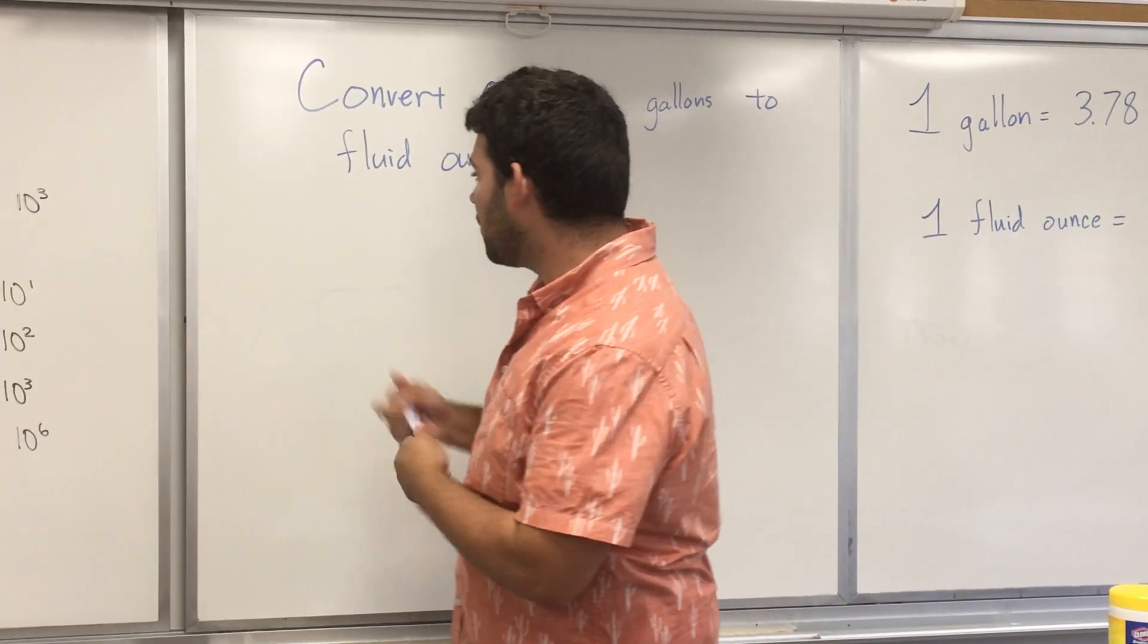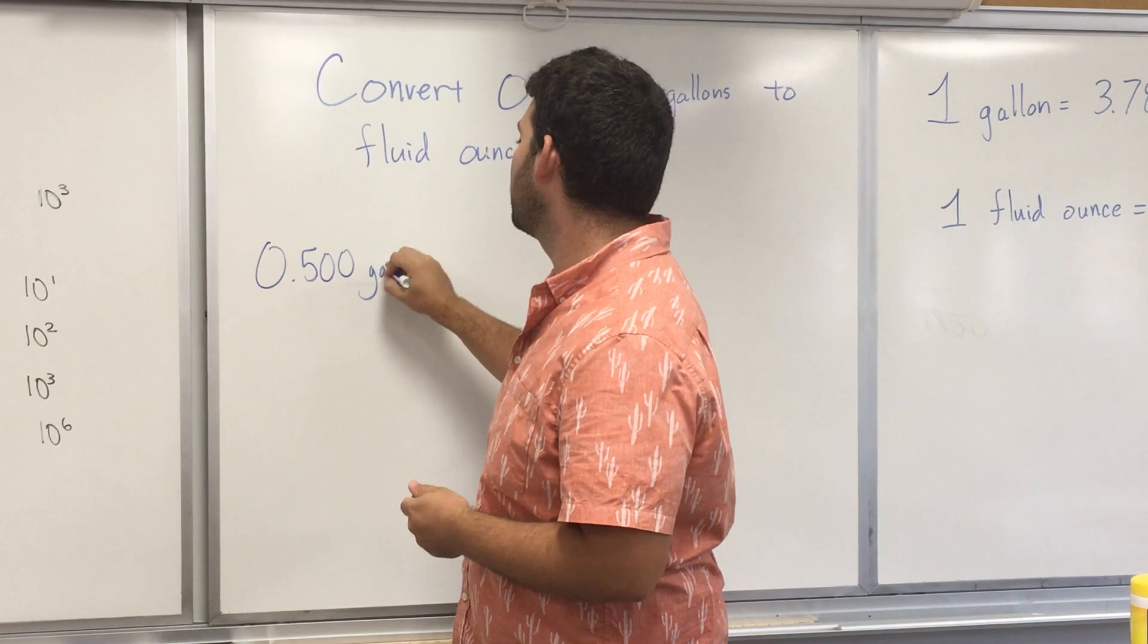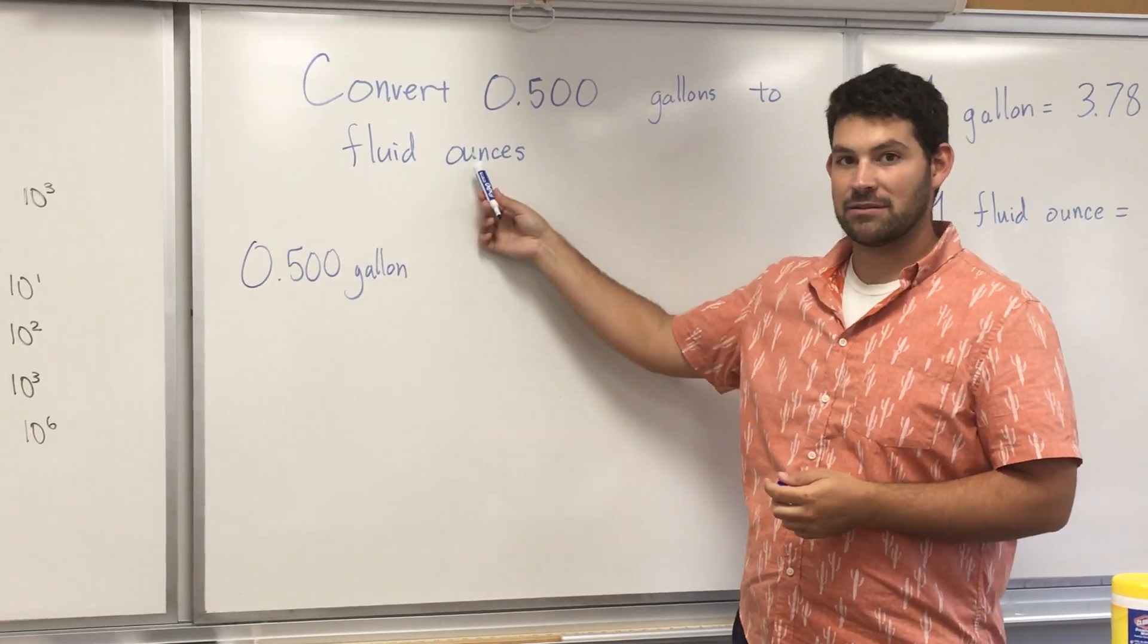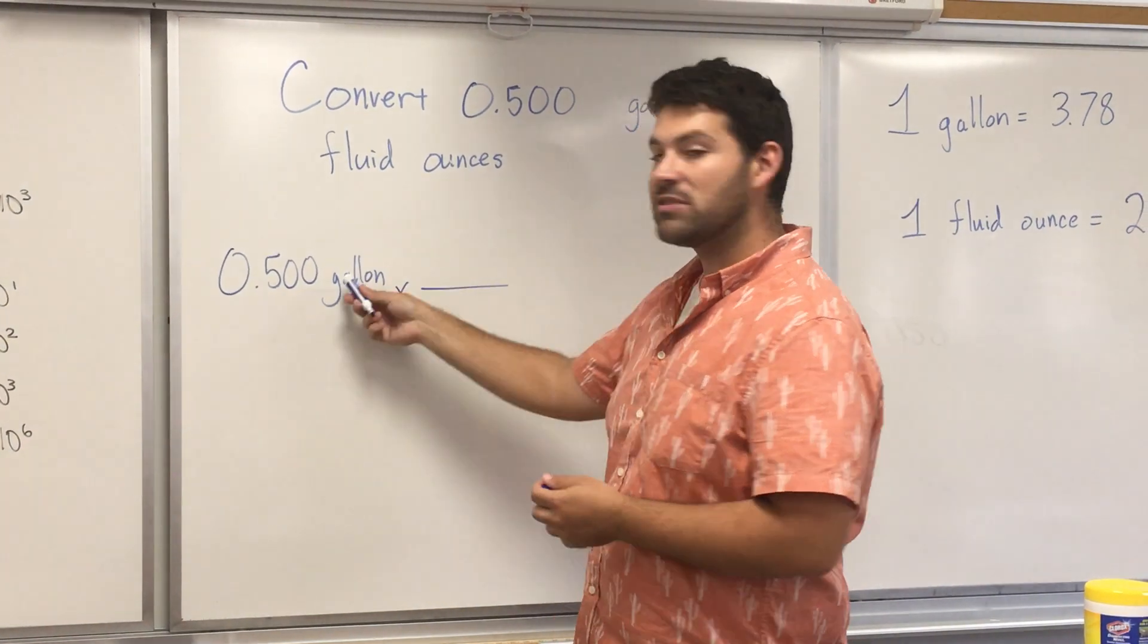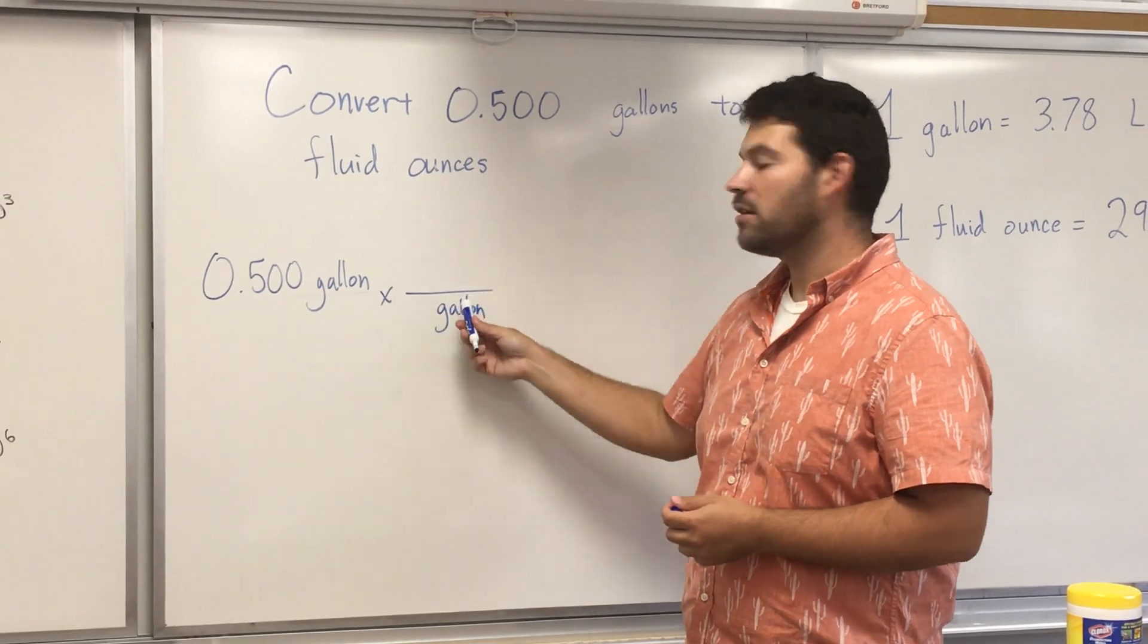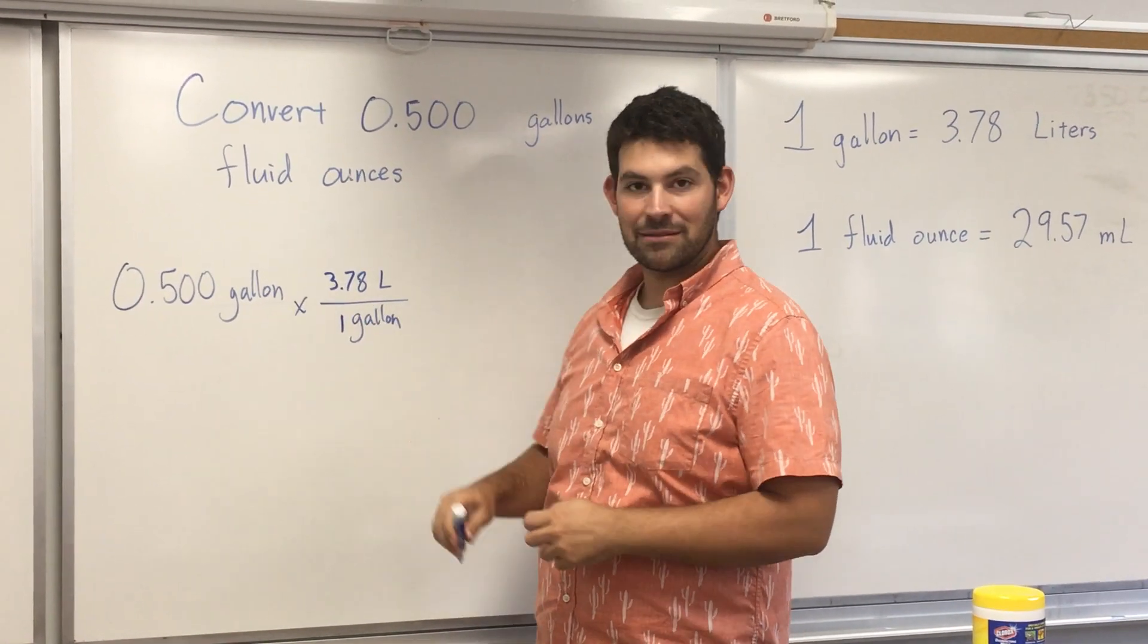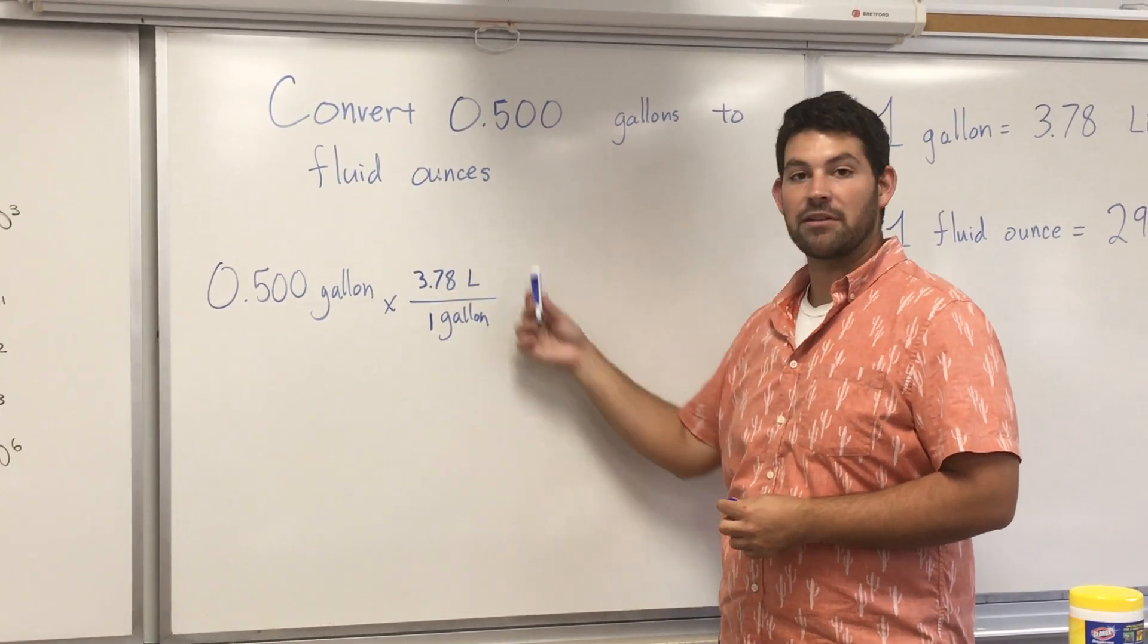Alright, so I'm going to start by writing down the given. I have 0.500 gallons. My attempt is to get to fluid ounces. The first thing I'm going to do, I'm going to use the gallon. I know that if I put it on the bottom, it'll go away. So I know that one gallon is equal to 3.78 liters. I'm not at the final step. The question wants me to go past liters, but I'm just starting there.